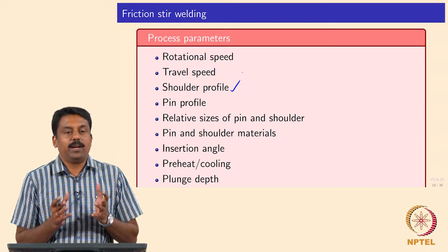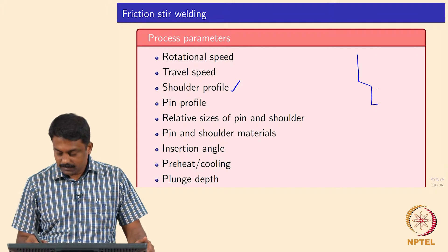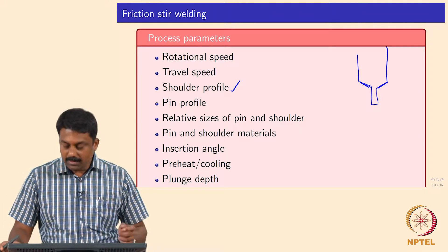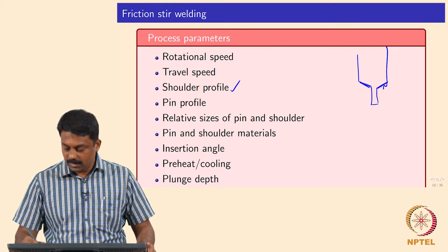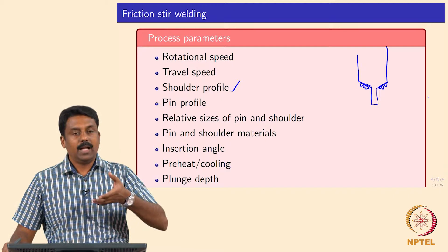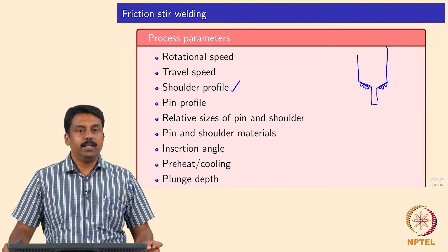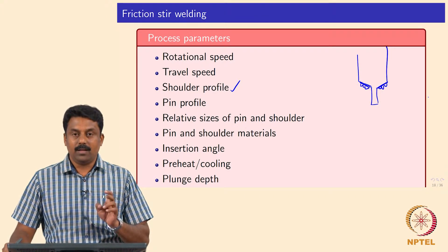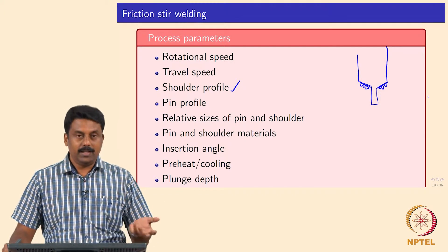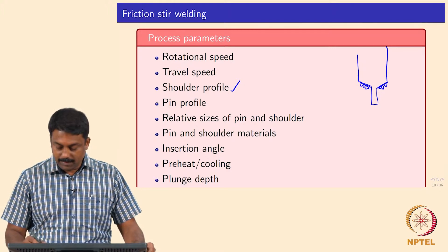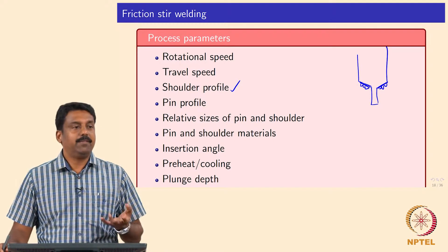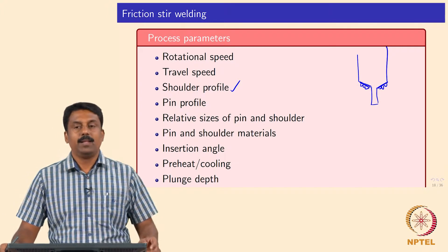The profile of the shoulder is also important — whether it is flat or has edges or other configurations — because it affects frictional heat generation and mechanical deformation. Similarly, the pin profile — whether simple circular, helical, or hexagonal — influences welding characteristics. The size of the pin relative to the shoulder, and the material used to make the pin and shoulder, also determine the process characteristics.